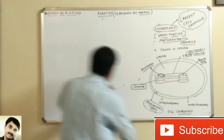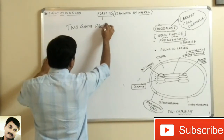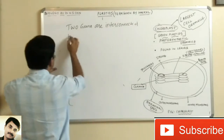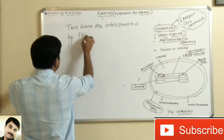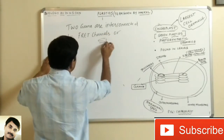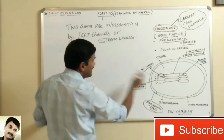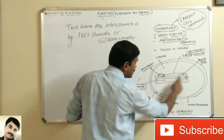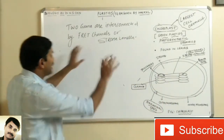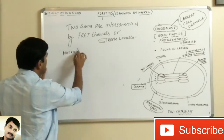Two grana are interconnected by fret channels, also called stroma lamellae. The two grana are joined together with the help of the stroma lamellae or fret channels.